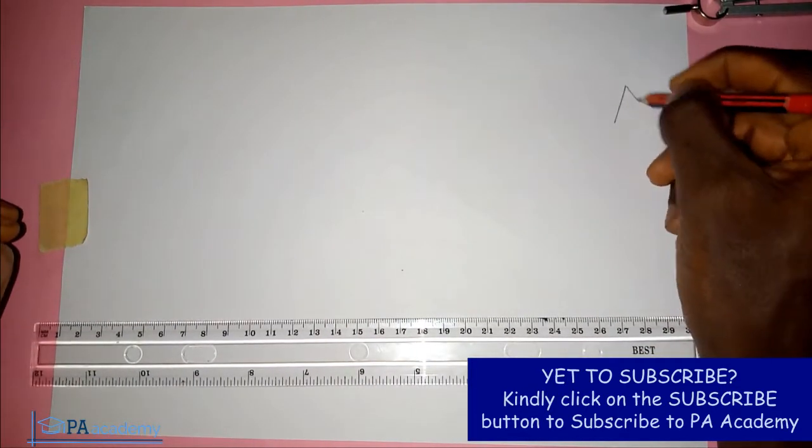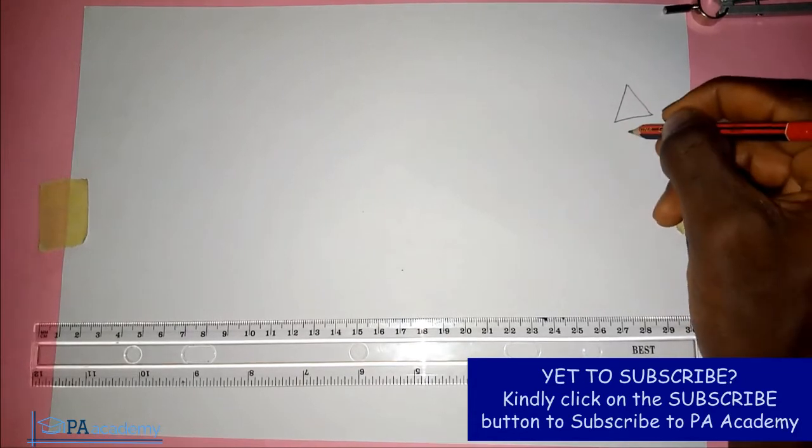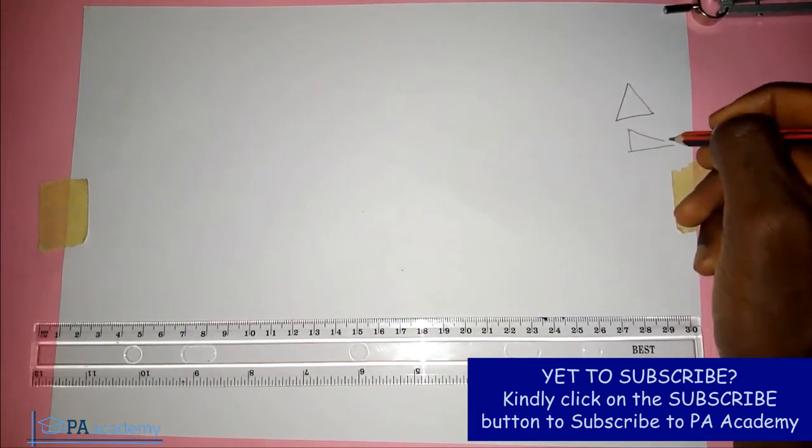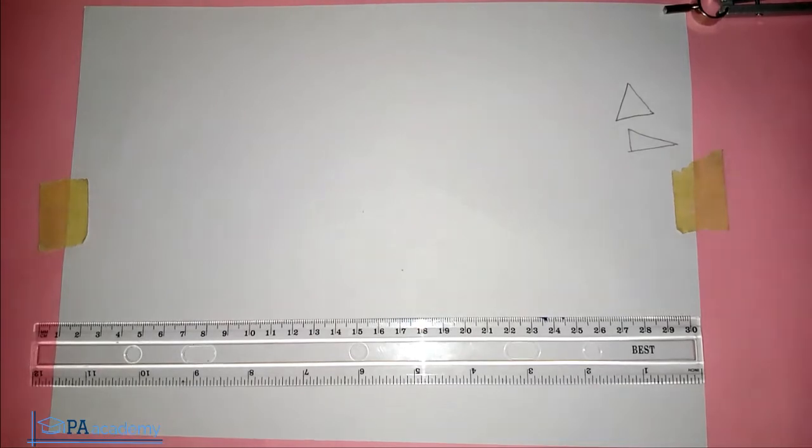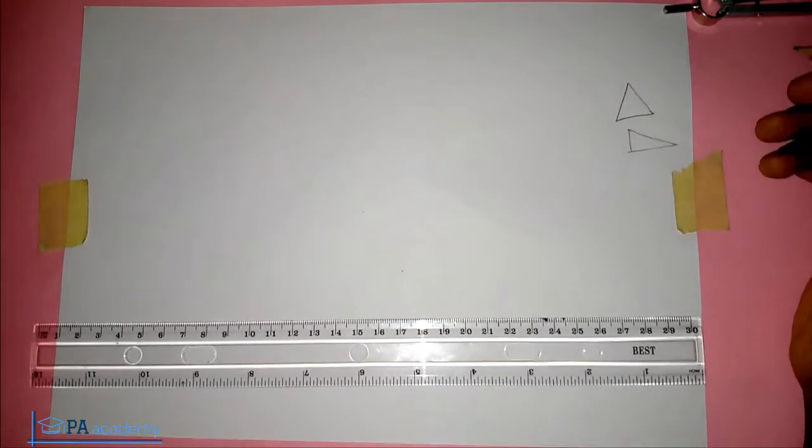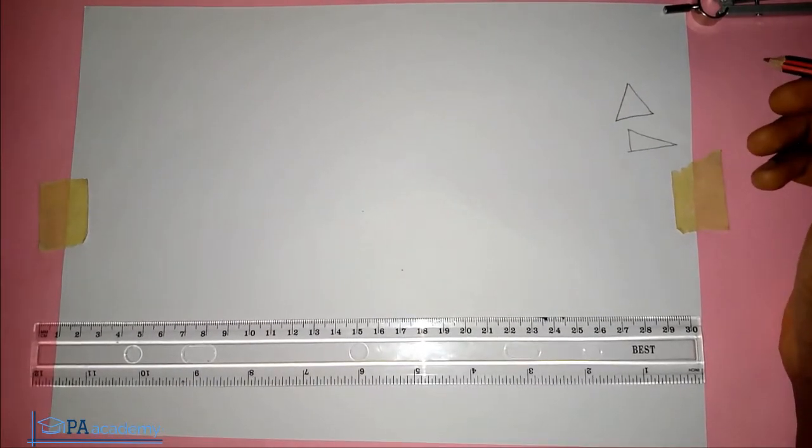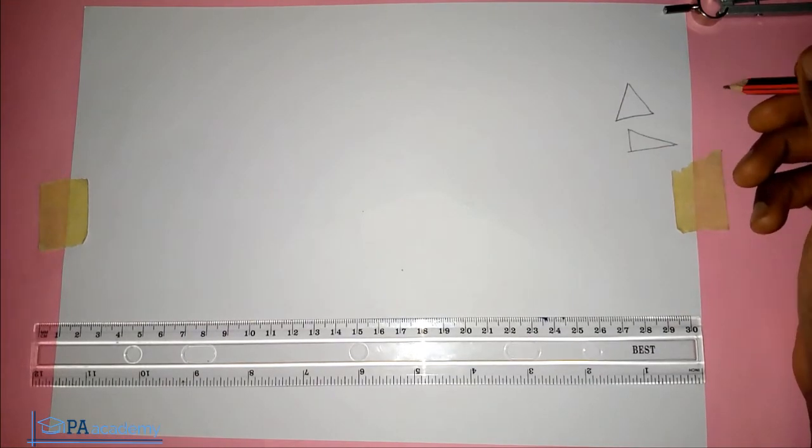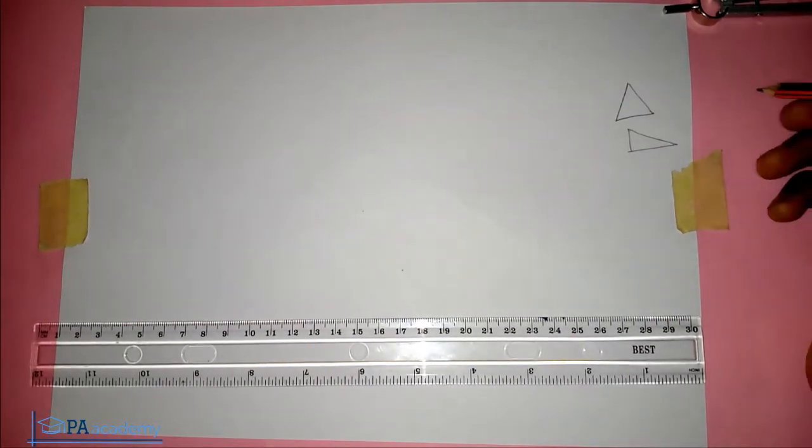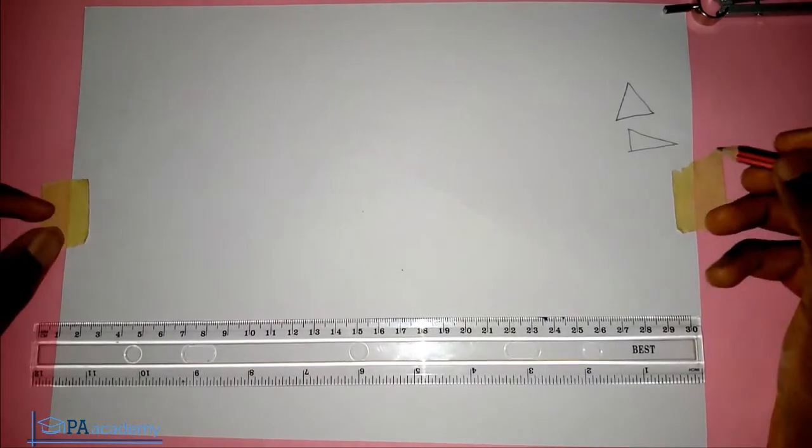So if you have a triangle, depending on the type of triangle, maybe not even equilateral, maybe a scalene triangle for example, and you are given the length of the three sides, how do you go about it? That's what we are going to be doing in this video.